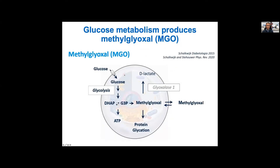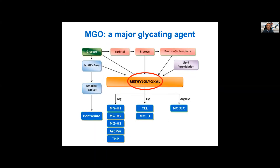Now I want to focus on the study of the molecular alterations that take place in glycation. We know glucose metabolism produces methylglyoxal — a highly reactive dicarbonyl that can react with certain amino acid side chains, damaging proteins. There are other glycating agents; basically any sugar can be a glycating agent, but methylglyoxal is definitely a major one.